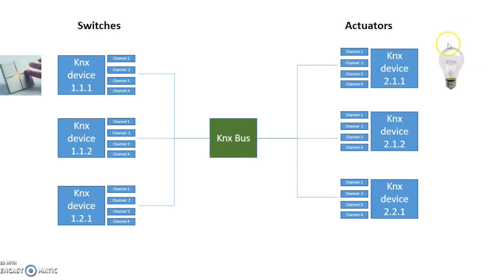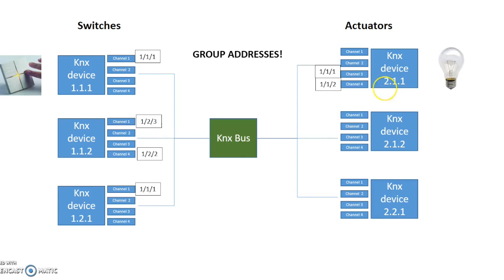In this case there's just one actuator which turns on this light. The devices are linked together by things called group addresses, which are different from the individual device addresses. These are the linking addresses which will link, say, channel 1 of device 1.1.1 with channel 3 on another device. Each channel can be given one or a series of different group addresses, so that channels are linked together through these group addresses.